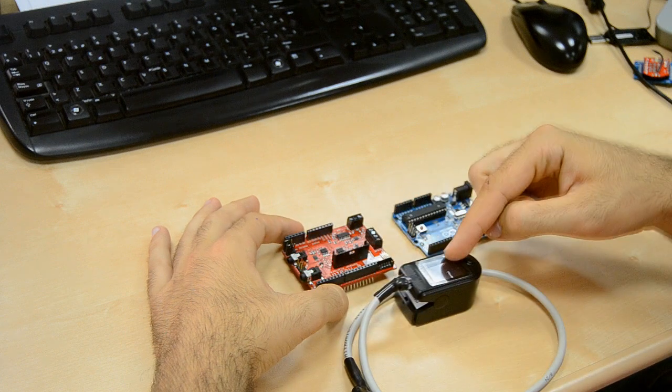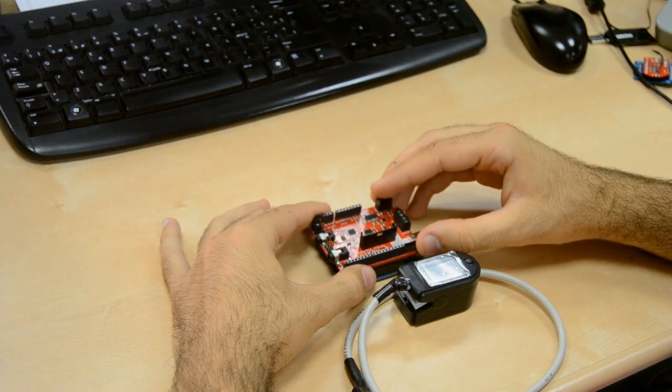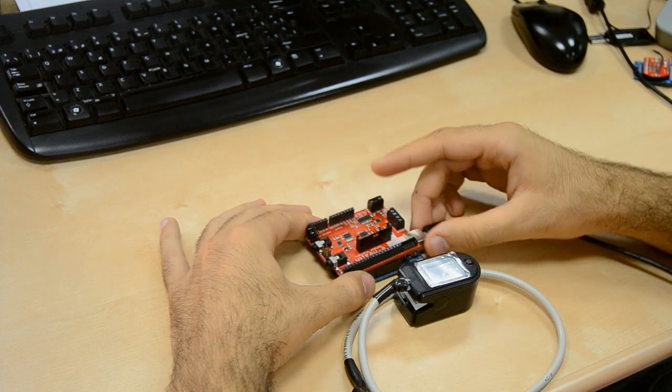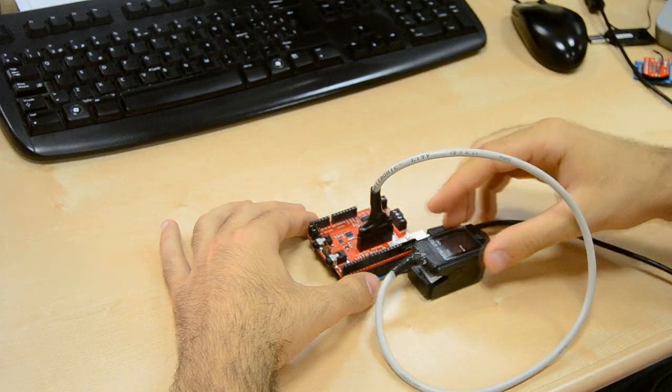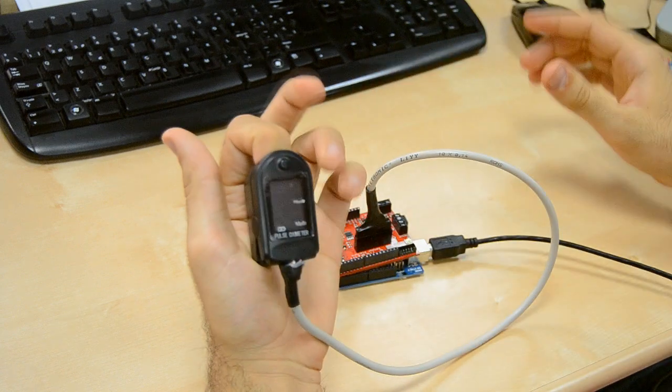As an example of use, I am going to connect the pulse and oxygen in blood sensors. First, connect the sensor to the Arduino and plug the sensor. Then just insert the finger and press the ON button.